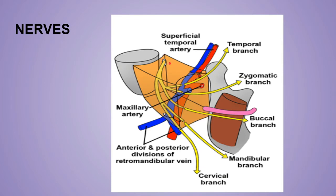From the posteromedial surface, the facial nerve runs forward through the gland, crossing the two vessels — the retromandibular vein and the external carotid artery. Behind the neck of the mandible, the facial nerve divides into two main branches: the temporofacial branch and the cervicofacial branch. The temporofacial branch gives the temporal and zygomatic branches, while the cervicofacial branch gives the buccal, marginal mandibular, and cervical branches. These five terminal branches emerge along the anterior border and apex of the parotid gland.